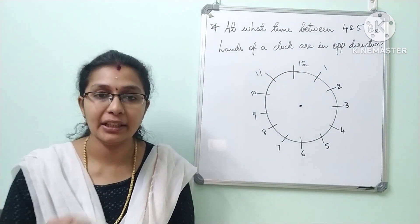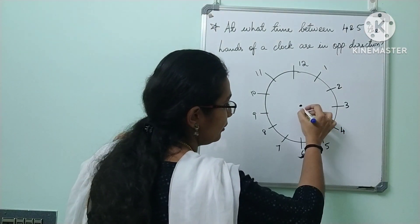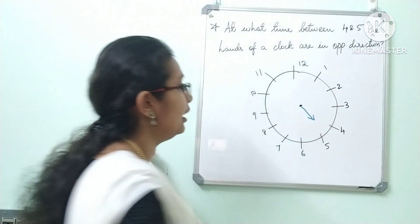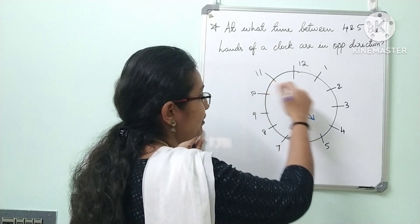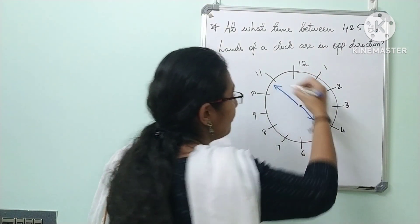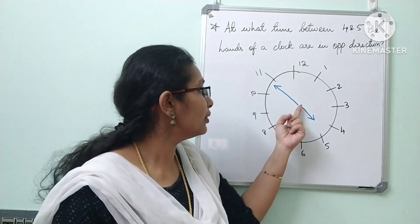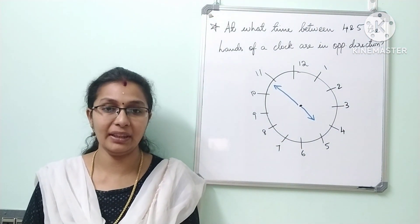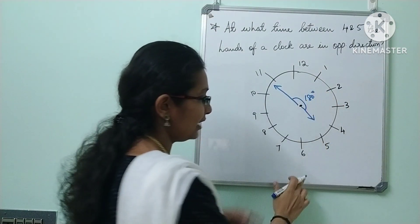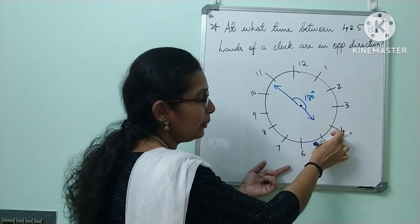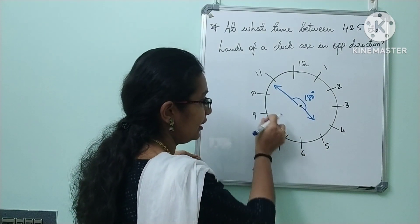We are going to use the time between 4 and 5. So, if you have any doubts — opposite is 180 degrees. Check it out. In between 4 and 5, there are 15 degrees. 30, 30, 30, 30: 1, 2, 3, 4, 5. 30 into 5 is 150. Here is 15 degrees and here is 15 degrees, so 30 degrees gives 180 degrees total — that is 180 degrees.